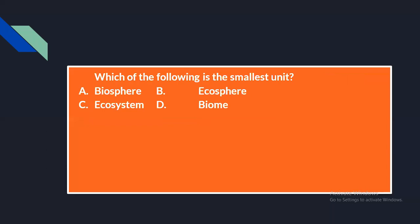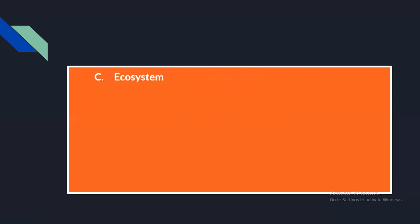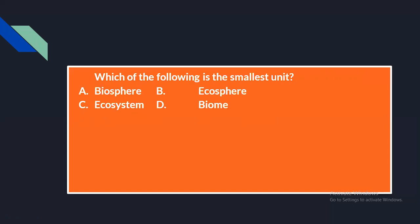The next question — put a star mark here as it is very important: which of the following is the smallest unit? Option A: biosphere, option B: ecosphere, option C: ecosystem, option D: biome. We have already discussed biosphere, ecosphere, ecosystem, and biome. Comparing the definitions, the smallest unit is ecosystem. All others — biosphere, ecosphere, biome — are supersets of the ecosystem.